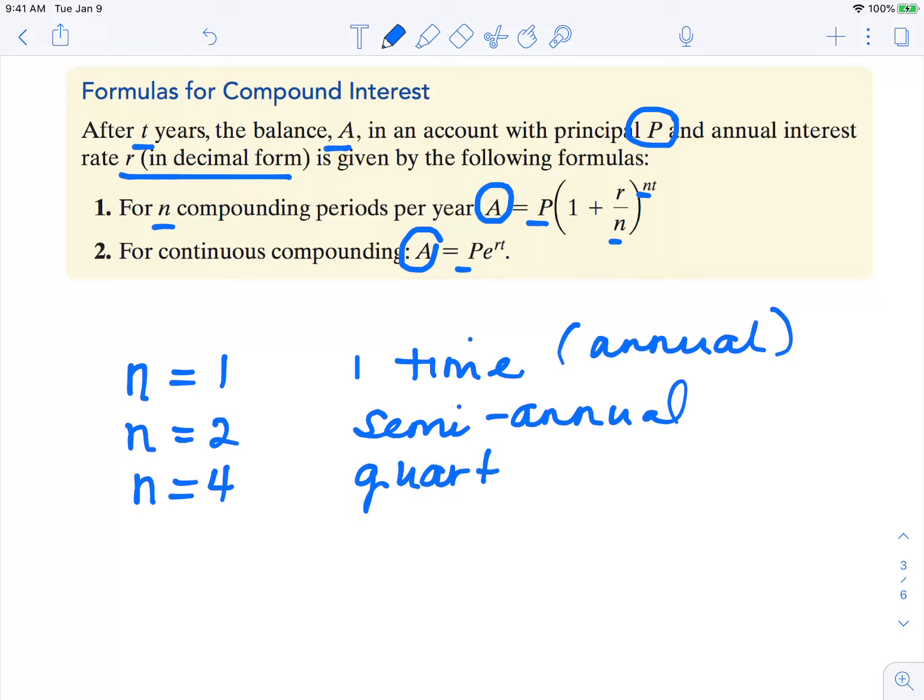If N is 12, we would say it compounds monthly. If N is 365, it's compounding daily. So these are some of the common compounds.